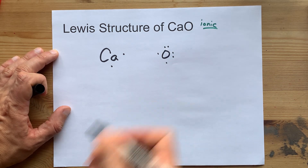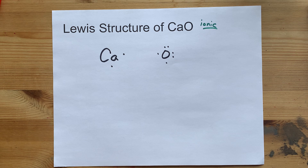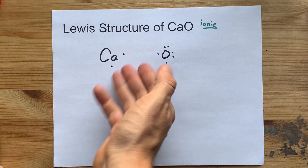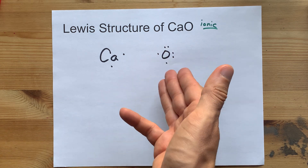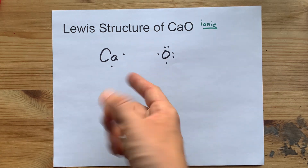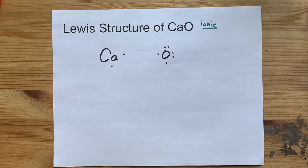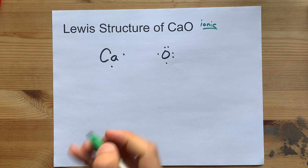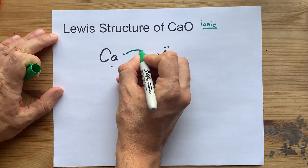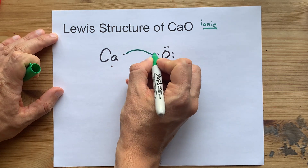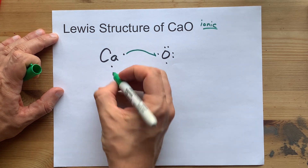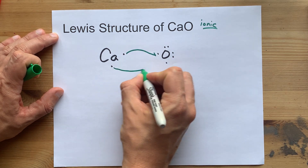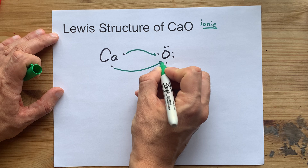I'm supposed to spread them out before I double them up. Calcium is a metal, so it wants to give away its electrons. Oxygen is a non-metal and an electronegative one at that, so it wants to accept electrons. So the calcium gives one of its electrons away, pairs up with that unpaired electron, and gives its other electron away to the same atom.